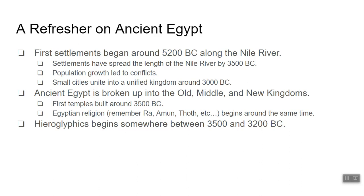You also have to remember ancient Egypt had the temples, the pyramids, and that religion with all the different gods like Thoth, Ra, and Amun — all listed on the board. And last but not least, the writing style for the ancient Egyptians: hieroglyphics, which we've talked about before as well.